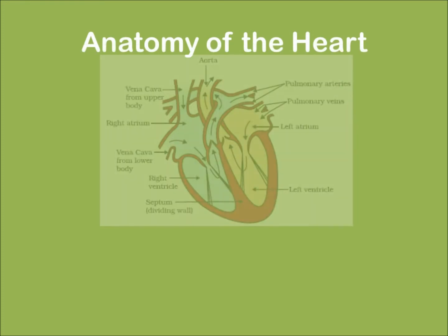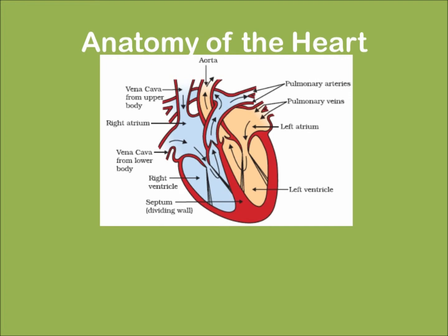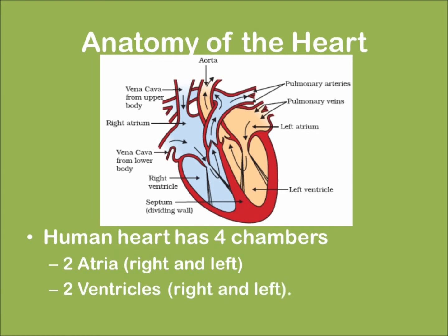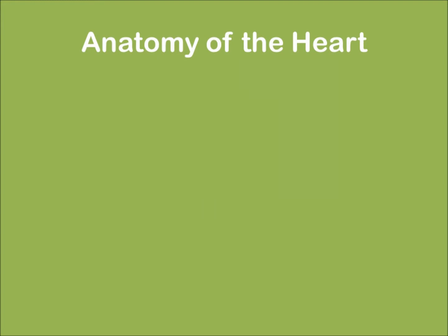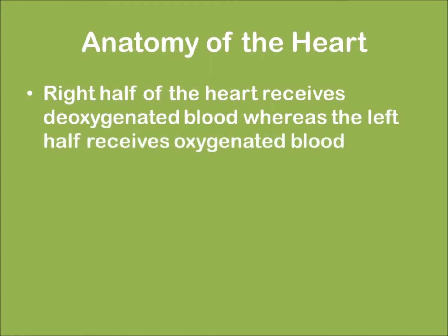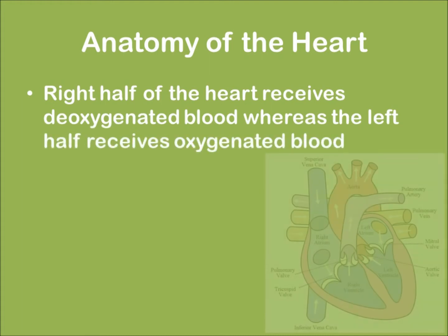Let's look at the anatomy of the heart. This is how the heart looks when cut. The human heart has four chambers, two of which are called atria, which are the upper ones, and the bottom two are called the ventricles. The right half of the heart receives deoxygenated blood, whereas the left half receives oxygenated blood.